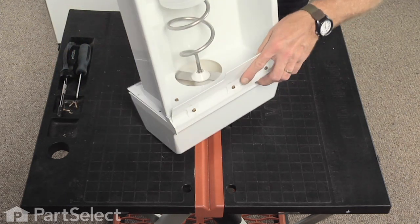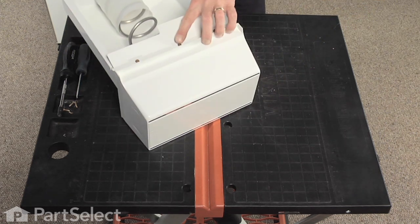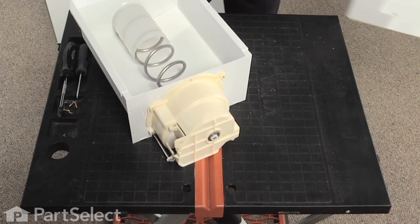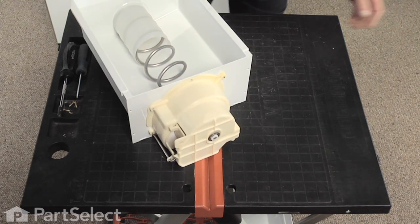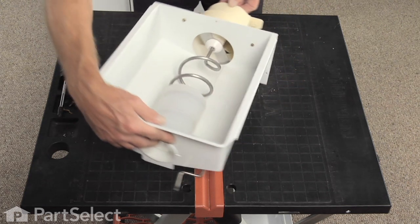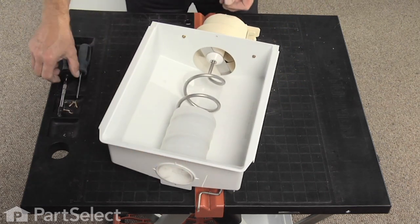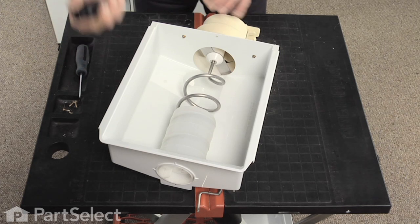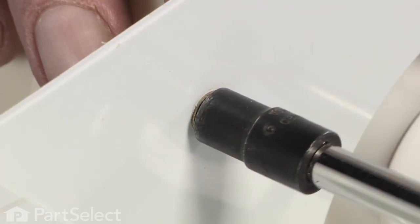Now slide the cover away from the drum. Next we're going to remove four more quarter inch hex head screws, two on the inside of the drum and two on the bottom side. This secures the housing to the ice bin.